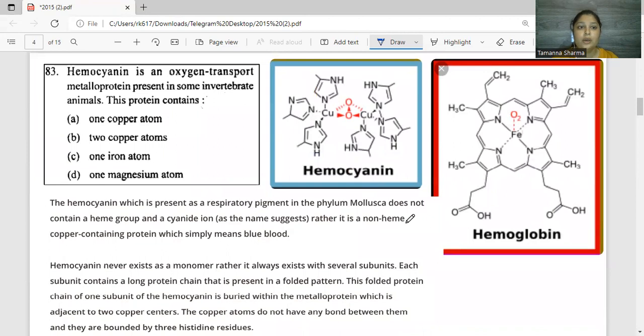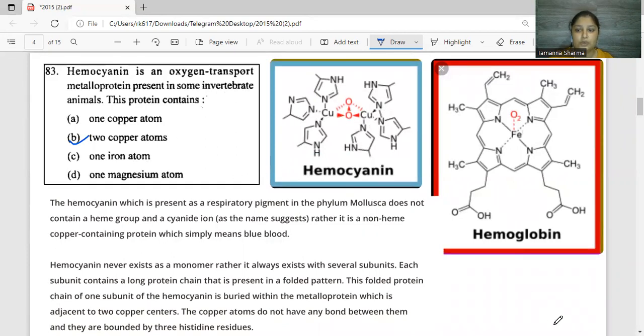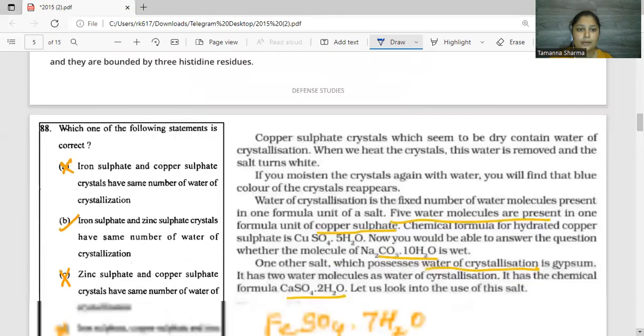Next question is about hemocyanin. Hemocyanin is an oxygen transport metalloprotein. This is a protein in which metals are included. Humans have hemoglobin. Some animals have hemocyanin present. Look, here in this structure you will see that nitrogen, hydrogen, carbon, and oxygen are present, and two copper ions are present. So two copper atoms are present, so this option will be correct.